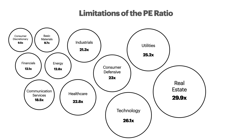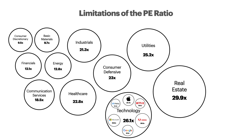For example, comparing the ratio of a technology company to that of an energy company. Instead, P/E ratios are typically used to compare companies inside the same industry. For example, comparing the P/E ratio of Meta to that of other technology companies such as Netflix, Google, Apple, Microsoft, and Adobe.